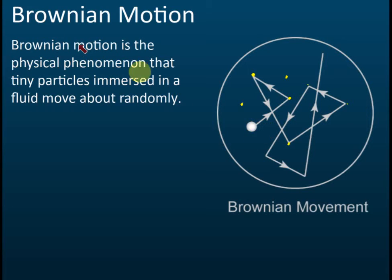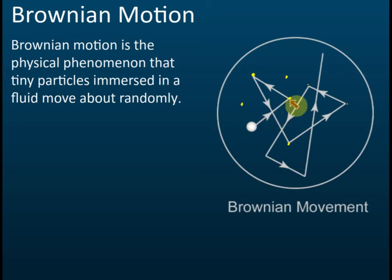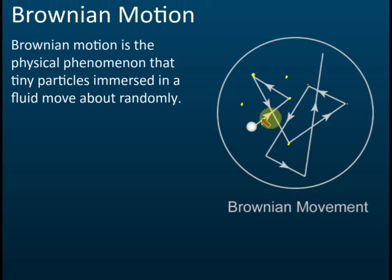The pollens are very big so you can see them, but you can't see the water particles. When the pollen moves, it collides with the water particles — it collides and bounces back, collides and bounces back — and this causes the random motion. That is Brownian motion.